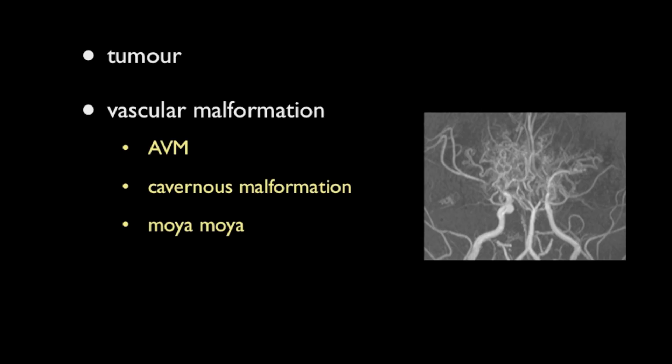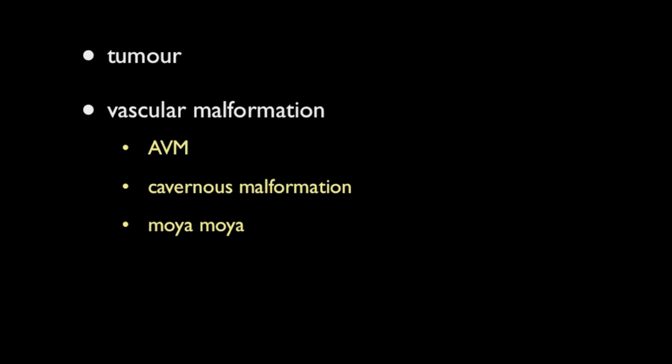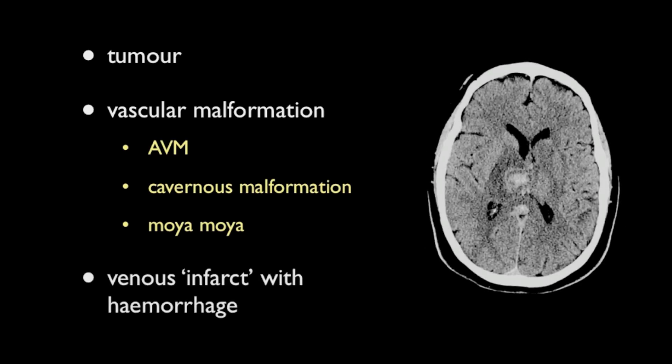Moyamoya disease typically presents this way in adults rather than in children, who tend to present with ischemic symptoms. And finally, venous infarcts which typically also hemorrhage should be considered; in this location, deep vein thrombosis of the internal cerebral veins, vein of Galen, or basal veins of Rosenthal should be suspected.